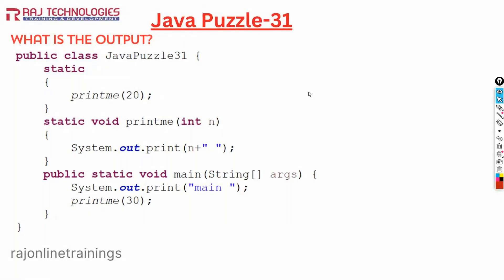Welcome to Raja Online Trainings in the series of Java puzzles. Let us go with one more new puzzle in this video. Here we have taken a class JavaPuzzle31 with a static block. We call this a static block, and in it we are calling the method printme and passing 20.